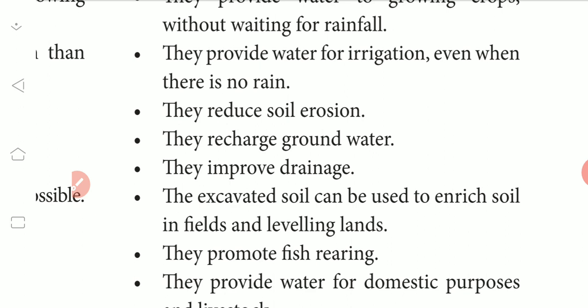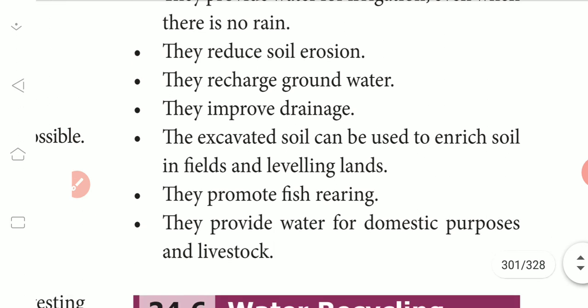Farm ponds promote fish rearing — if there is a water collector, fresh water can be used. They also provide water for domestic purposes and livestock.